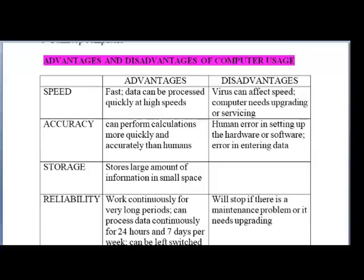When it comes to accuracy, a computer can perform calculations more quickly and accurately than humans. The disadvantage, however, is that it is prone to human error in setting up the hardware and software when we enter data. A computer is very accurate — it gives you exactly what you ask for and doesn't make mistakes. The only mistakes come from human error. They often use the term GIGO — Garbage In, Garbage Out. If you put in something of sense, you will get back something of sense; if you put in nonsense, you will get back nonsense.